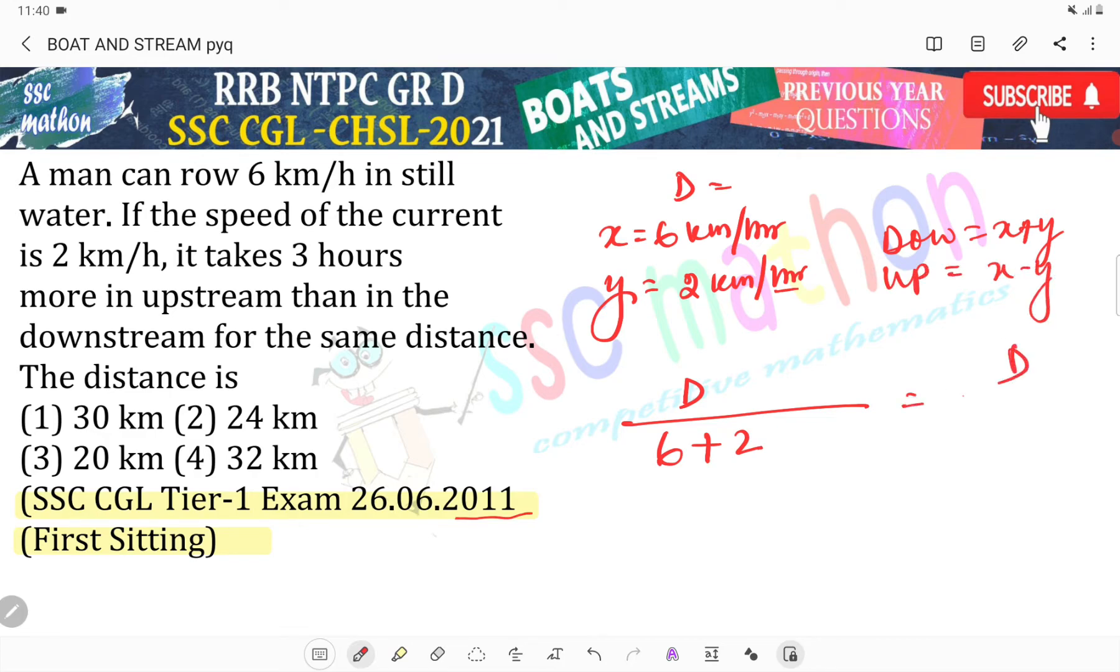So upstream speed is D divided by x minus y, means 6 minus 2. Now in downstream, more in upstream, 3 hours. It takes 3 hours more in upstream than in downstream.